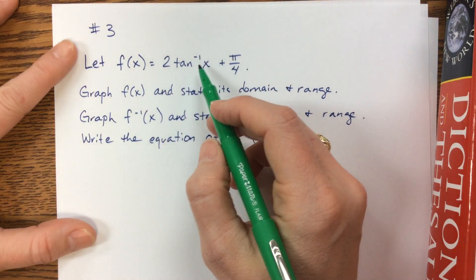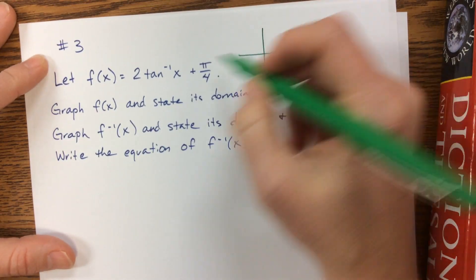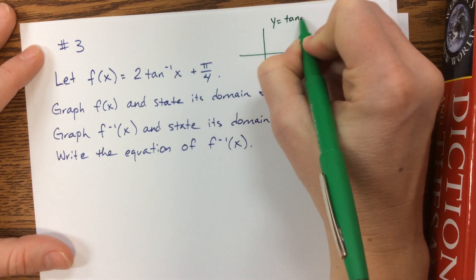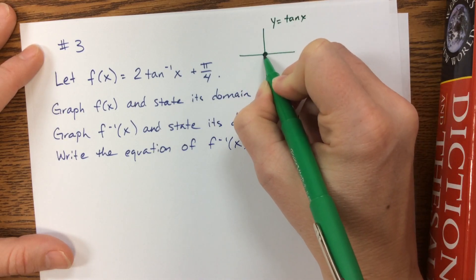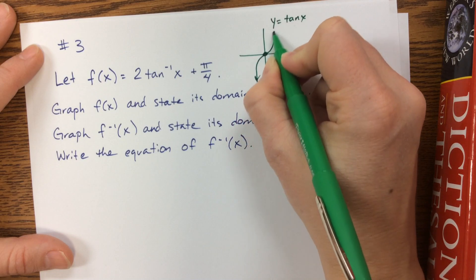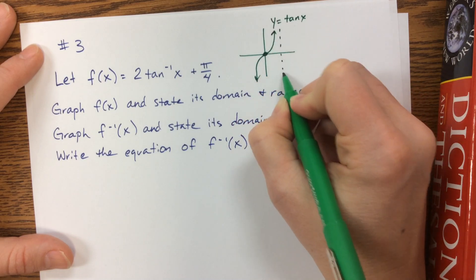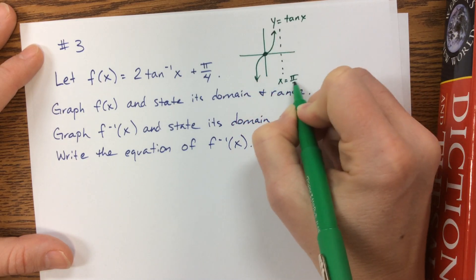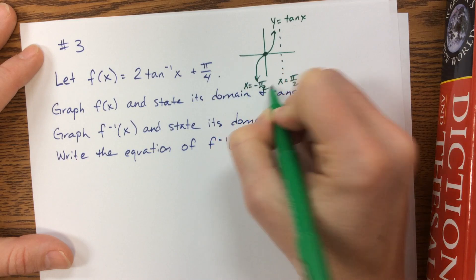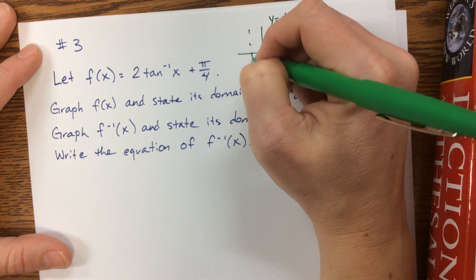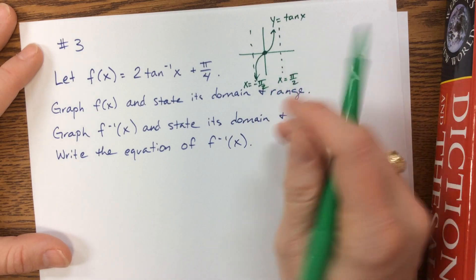I'm going to just real fast remember what tangent looks like. Tangent is 0,0, and then it does something like this, and it approaches, this is the asymptote x equals π/2, and this is the asymptote x equals negative π/2. I didn't draw the asymptote. It's doing something like this.